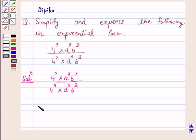Now this can be written as 4 raised to power 5 times a raised to power 8 times b cubed, over 4 raised to power 5 times a raised to power 5 times b squared.